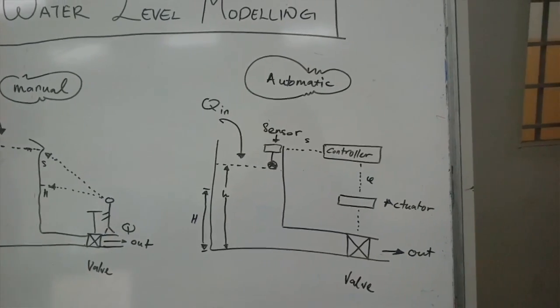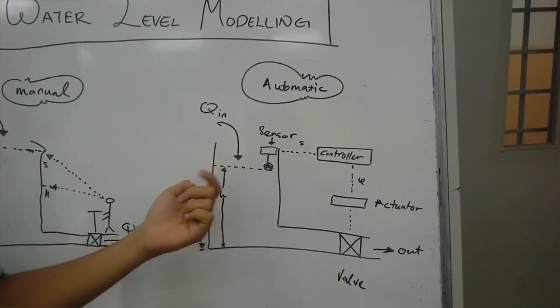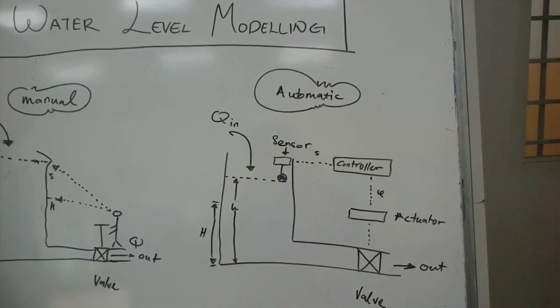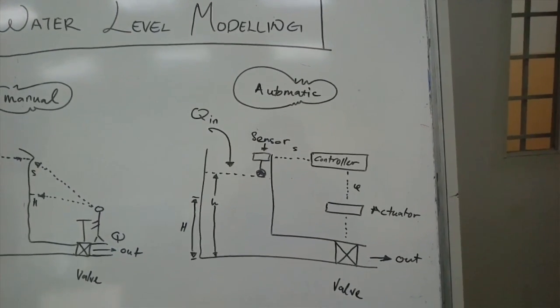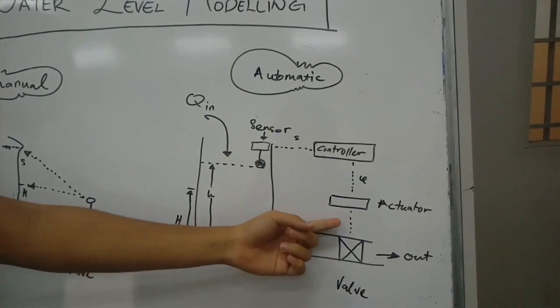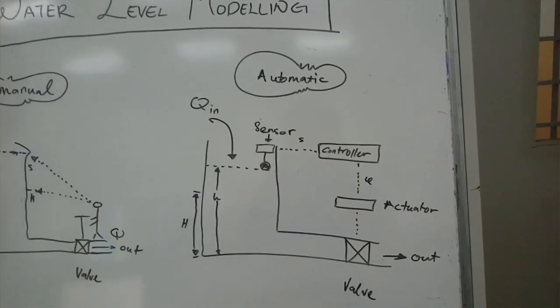The controller compares the sensed level with the desired level, and an error signal is generated. According to the error signal, the LTU control controls the output valve.